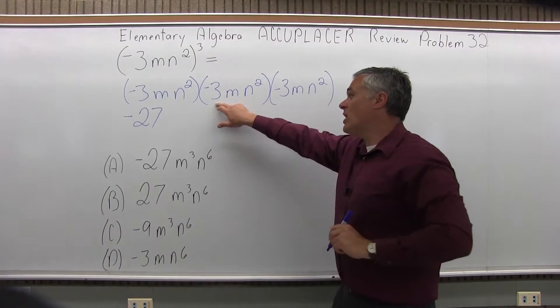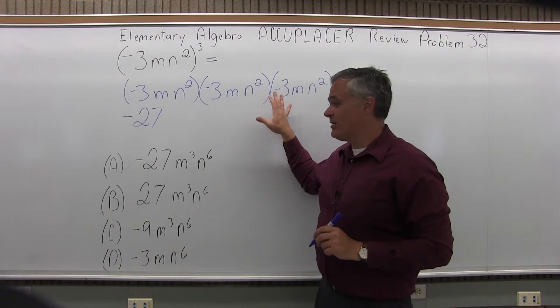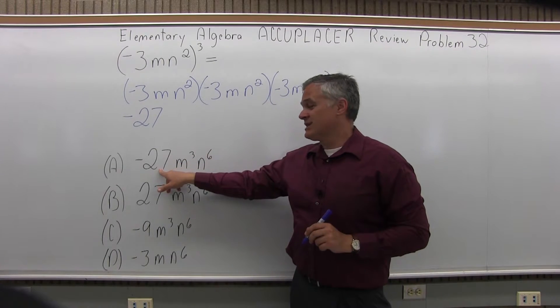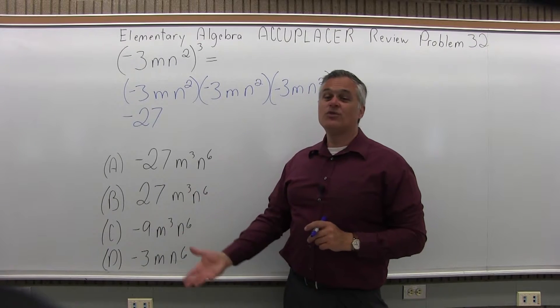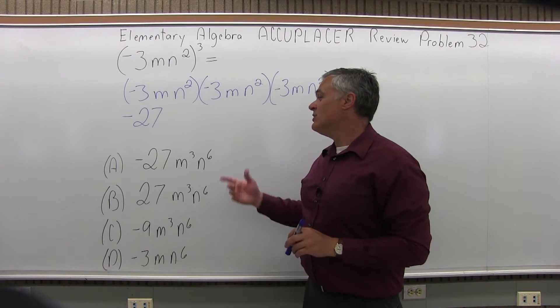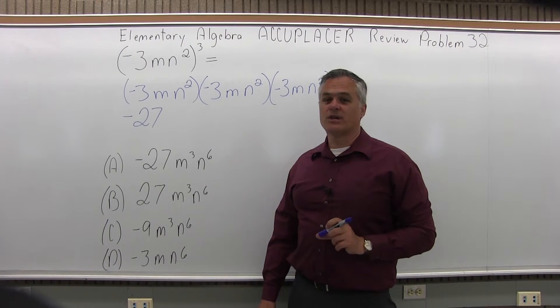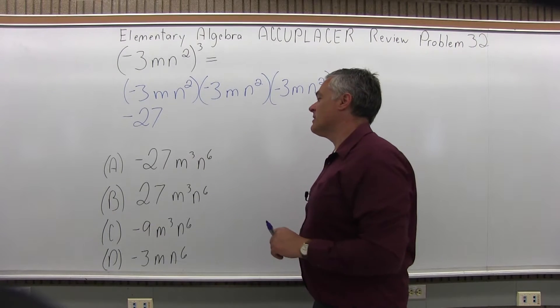Now if you want, if you look ahead without even doing the other variables, only option a has a negative 27. So from there, if you needed time, and this is an untimed test, you could just lock right into a and go with it. But let's finish it off and make it match up.